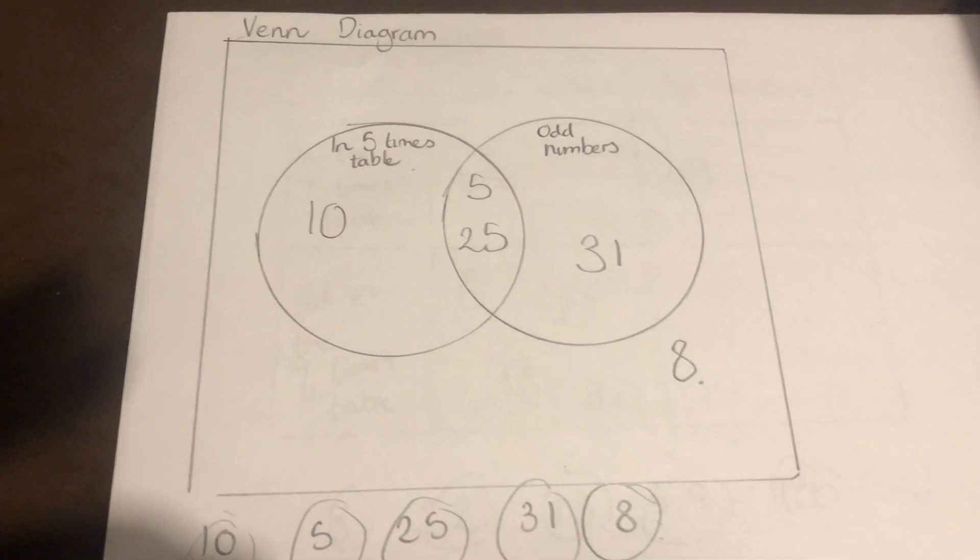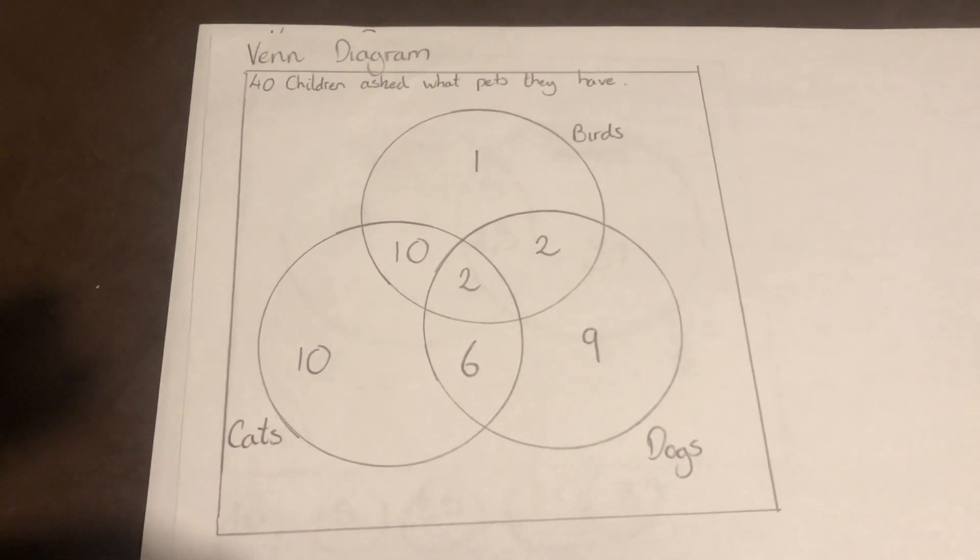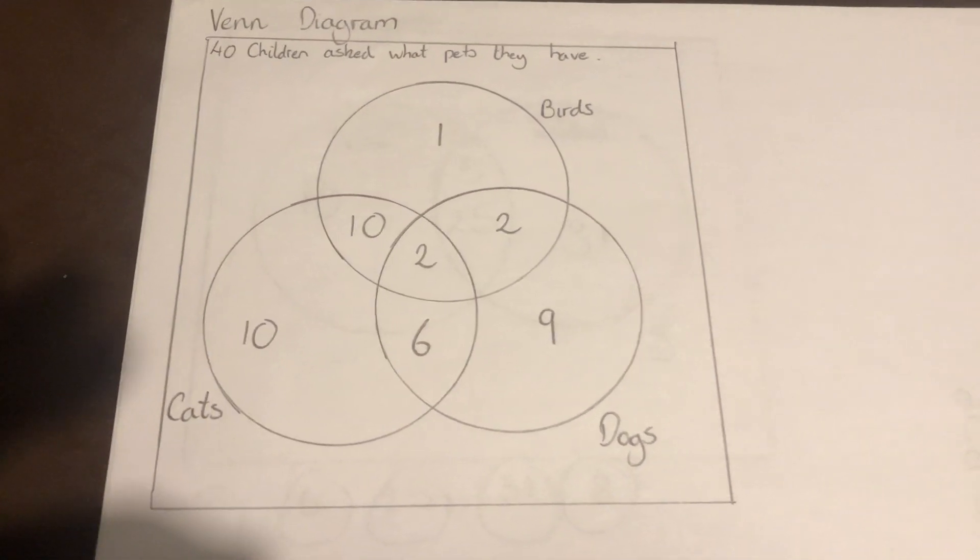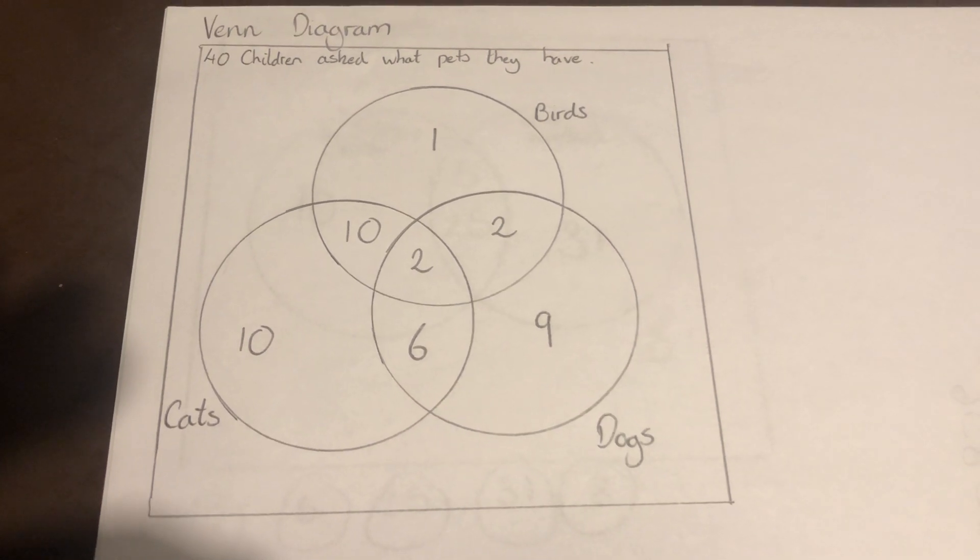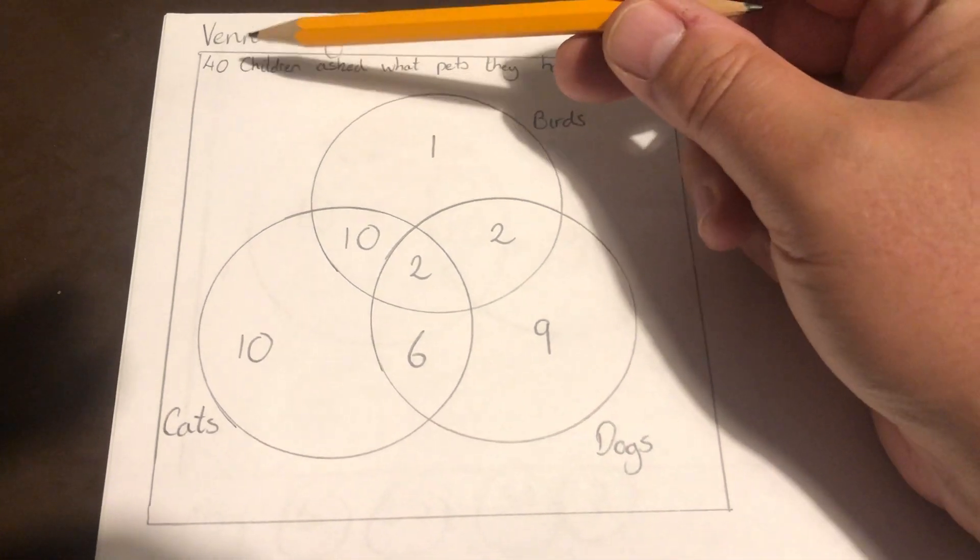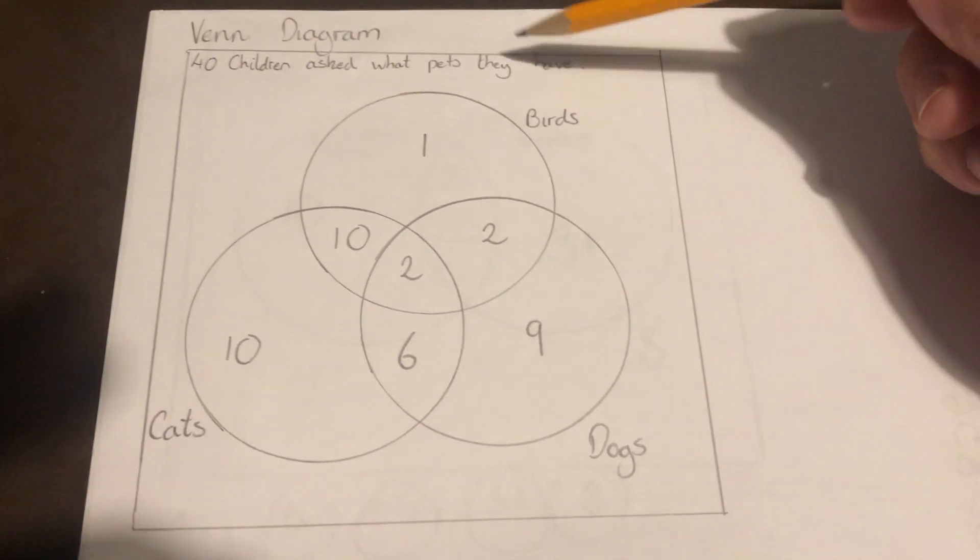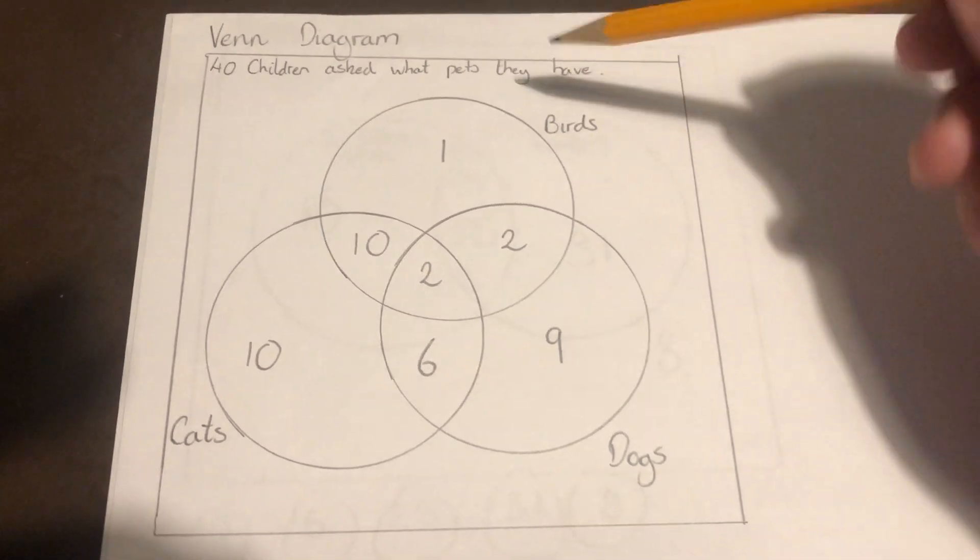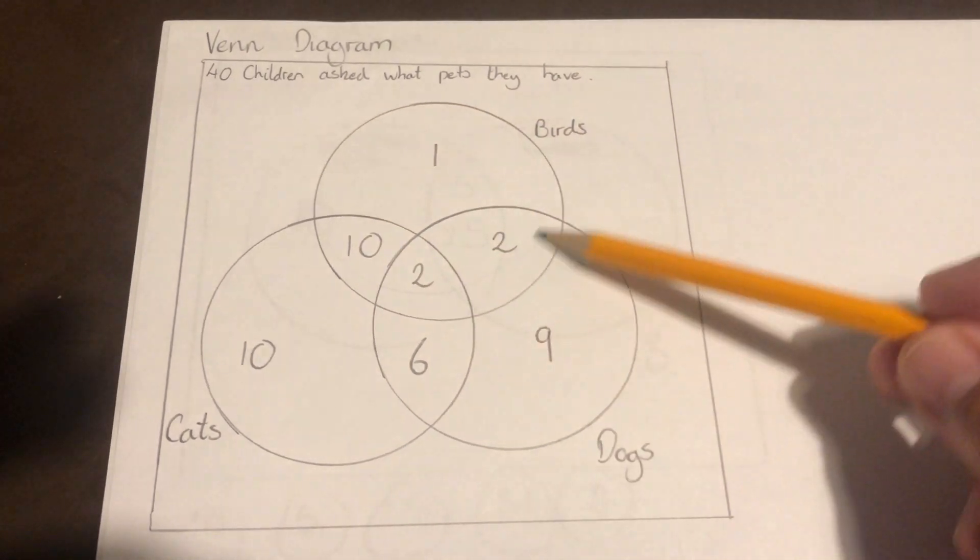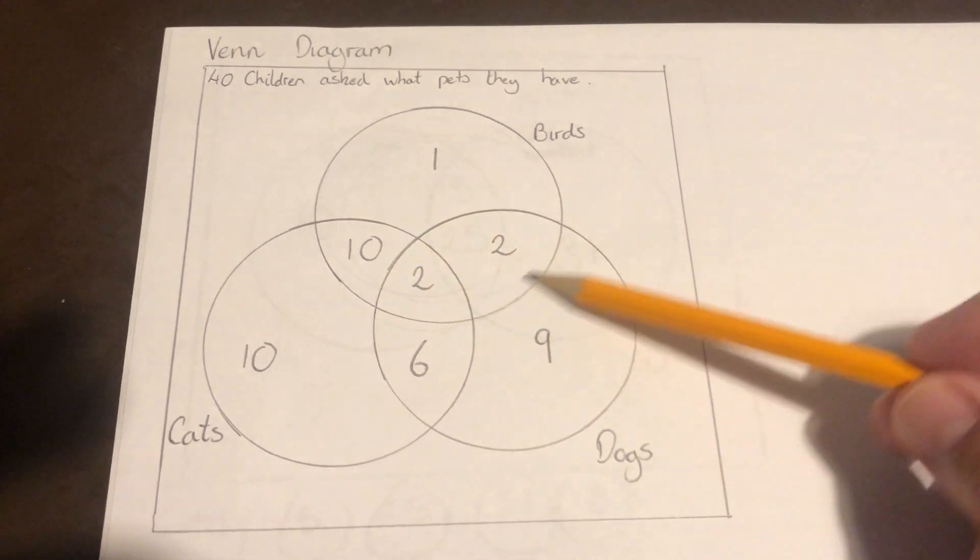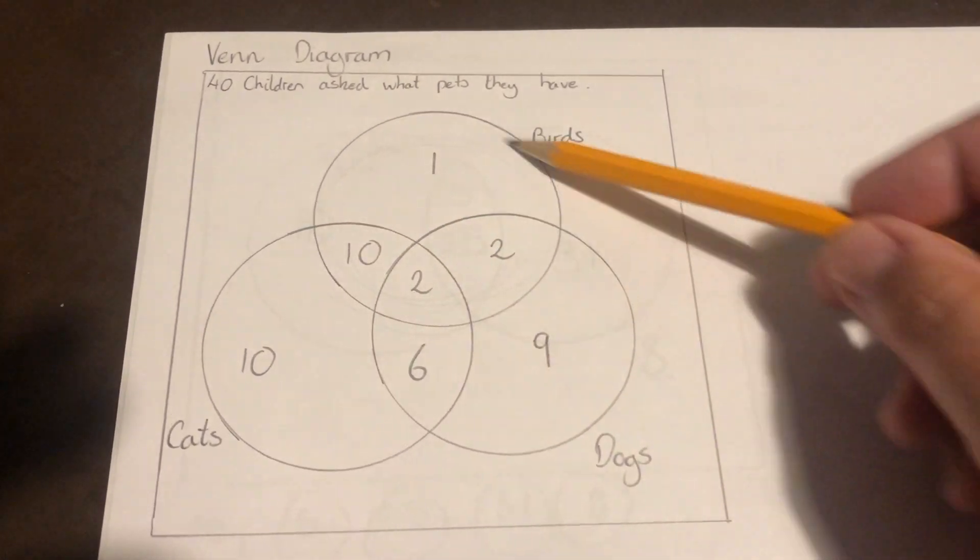The second one I've already filled in for you, just to explain, just so we can see a different one. Sometimes you get them with three circles. So this would be the data of 40 children asked what pets they have. So in this circle here is all the children that have a bird at home, a bird as a pet.